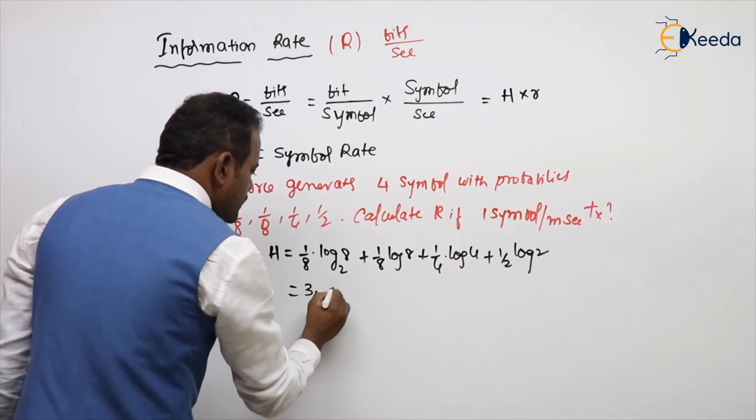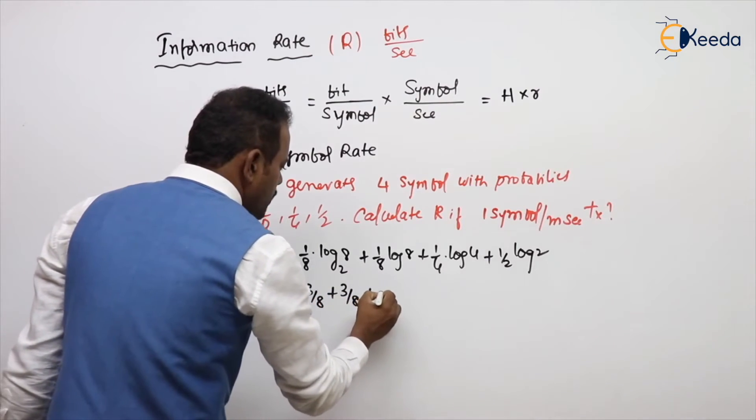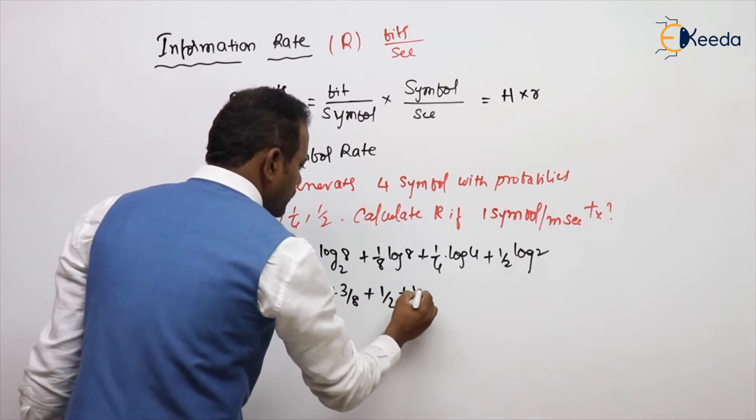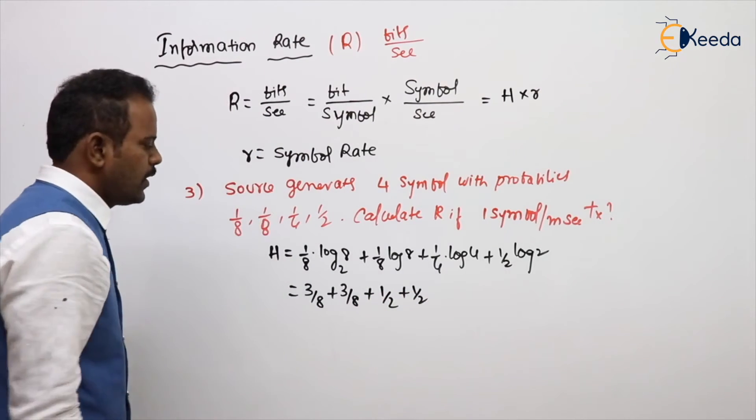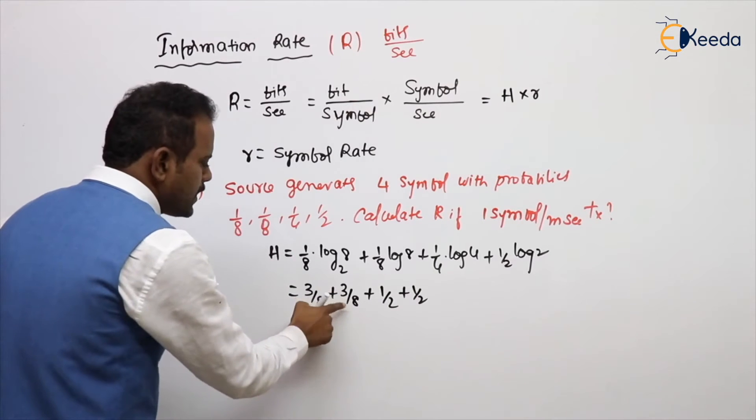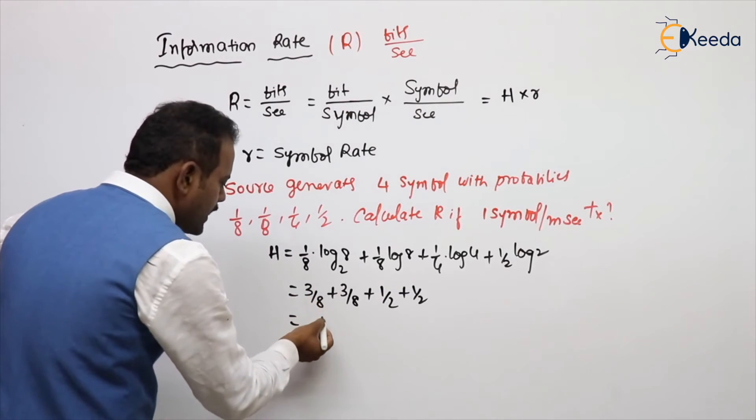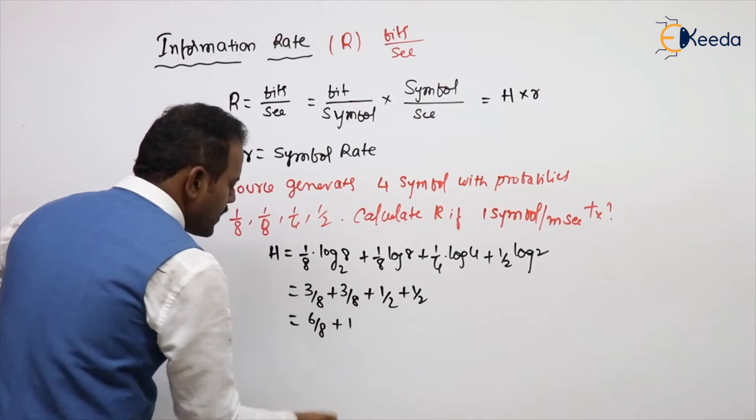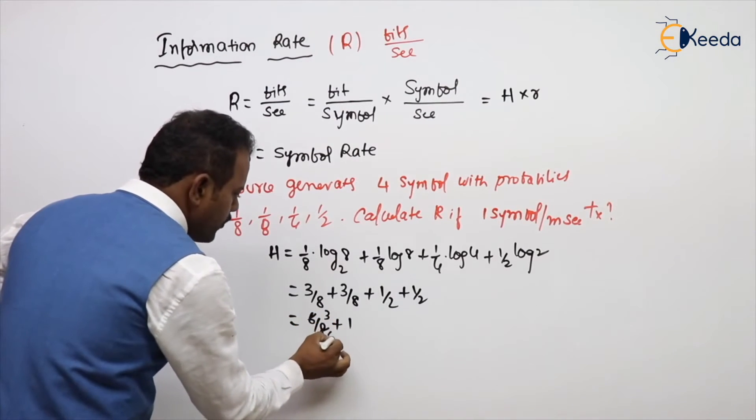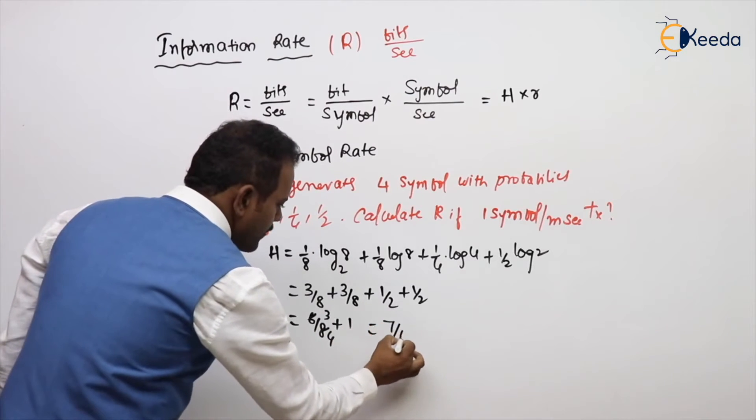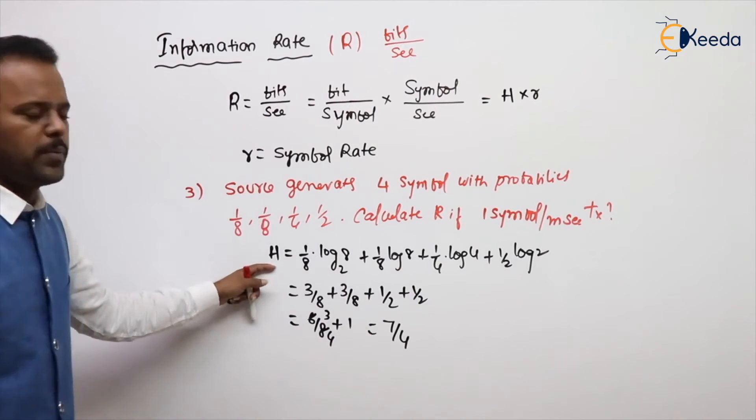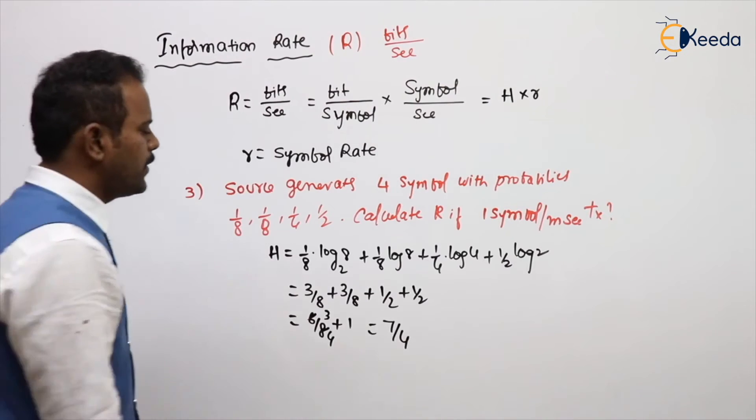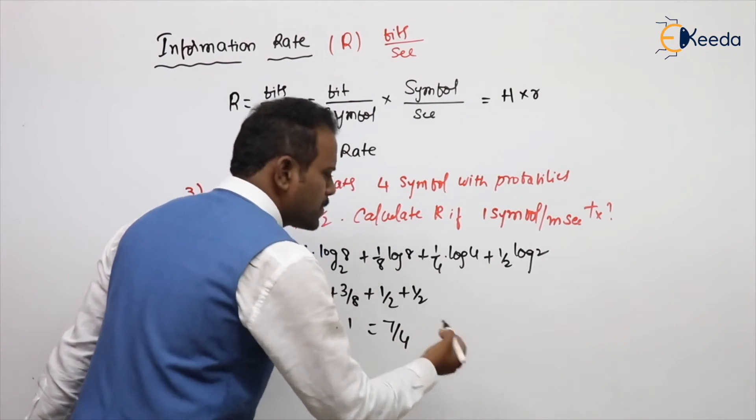Then what is this value? 3/8 plus 1/2. So 3/8 plus 3/8 is 6/8 plus this value is 1, so this is 3/4. I can say 7/4, that is the entropy. Entropy units are bits per message or bits per symbol.